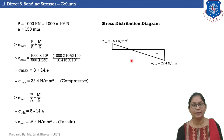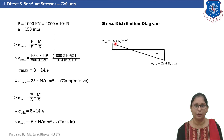The stress distribution diagram shows that one face is subjected to maximum stress of 22.4 N/mm² (compressive) and the other face is subjected to minimum stress of −6.4 N/mm² (tensile). This is the end of this session. In the next session we will solve more numericals. Thank you.